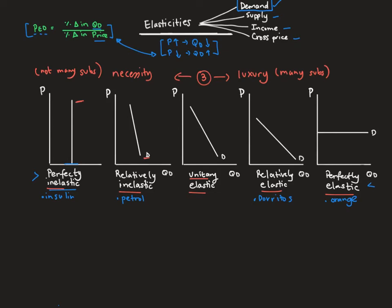Using the formula, for the perfectly inelastic case, let's assume there is a price increase from P0 to P1. Quantity demanded does not change. For example, if there's a 30% increase in price but a 0% decrease in quantity demanded, then 0 divided by anything gives an answer of 0. We can conclude that in a perfectly inelastic situation, the price elasticity of demand always equals 0.